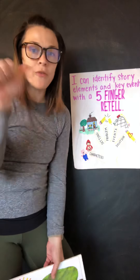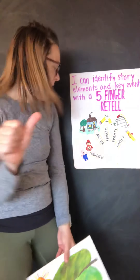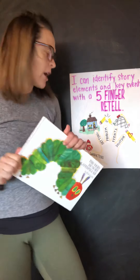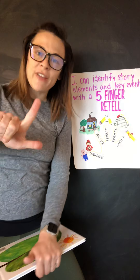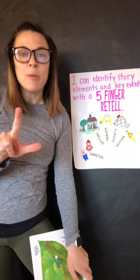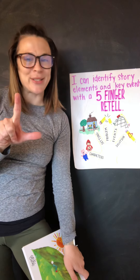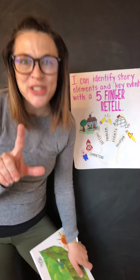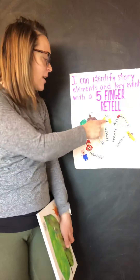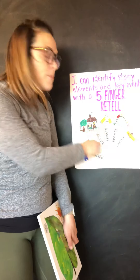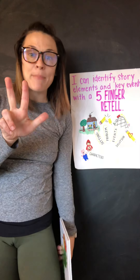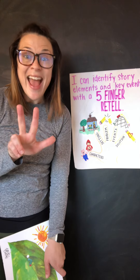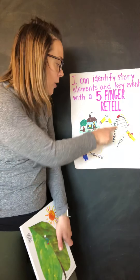For my thumb, I'll talk about the characters — the character in this book is The Very Hungry Caterpillar. For my pointer finger, I'll talk about the setting — this book is set outside, starting on a leaf, and the setting changes to a cocoon. My middle finger represents the problem: the caterpillar is hungry and looking for food.